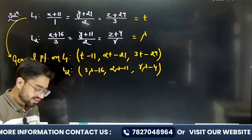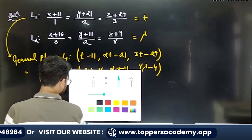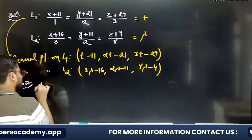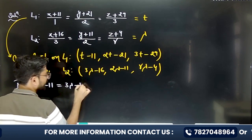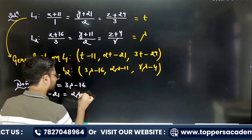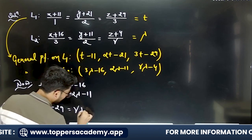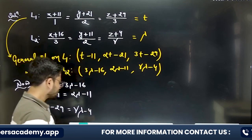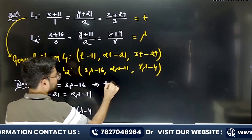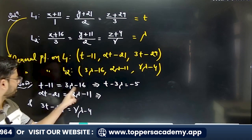At the point of intersection these coordinates are the same. Equating them: t−11 = 3λ−16, which gives t−3λ = −5. And 2t−21 = 2λ−11, which simplifies to 2t−2λ = 10, so t−λ = 5.